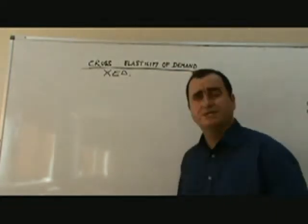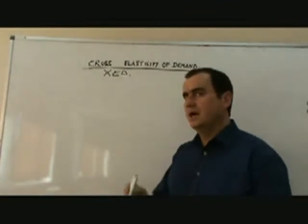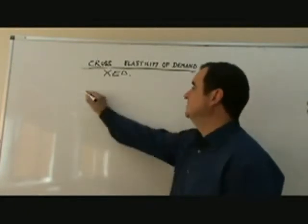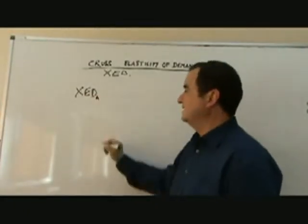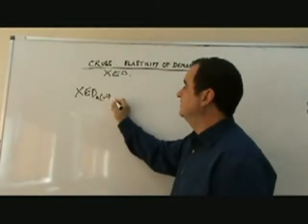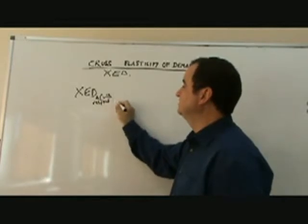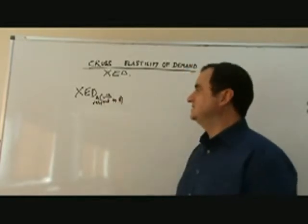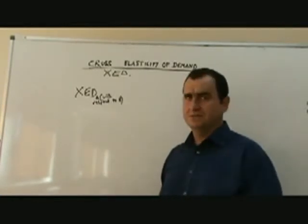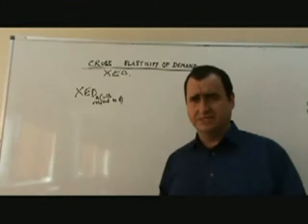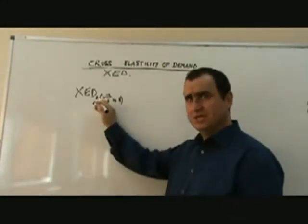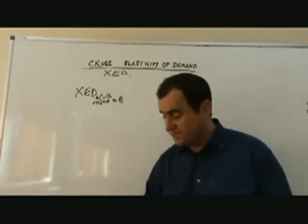The equation is quite easy. You might think it's difficult, but it's actually quite easy if you know the PED one because the cross elasticity of demand for good A with respect to B, so it's already looking complicated, but believe me, it isn't. What that means is we're going to measure how responsive is the demand for good A when B changes price.